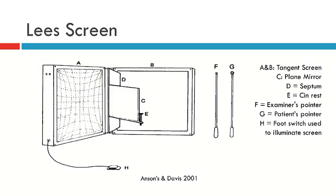Now what we didn't see in the photograph is that the Lee Screen also comes with a pair of pointers. One pointer is for the examiner and the other pointer is for the patient. We also have a foot switch or a foot pedal and this allows the orthoptist to turn on and off the screens so they can choose to illuminate which screen they choose at any point in time.